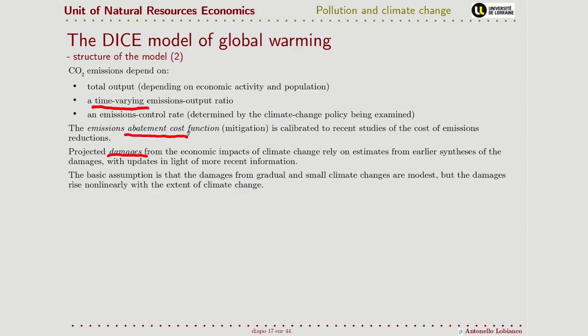There are these two main functions that return the cost of damage on one side and the abatement cost on the other. The basic idea is that damage will be gradual when warming is limited, but the increase will be more than linear as climate change continues.